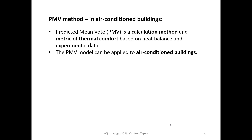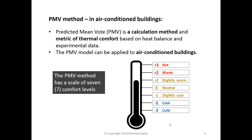The Predicted Mean Vote, or PMV, is a calculation method and metric of thermal comfort. It is based on sophisticated heat balance and experimental data, so there's a lot of science behind that. The PMV method can be applied to air-conditioned buildings, meaning buildings with mechanical cooling.